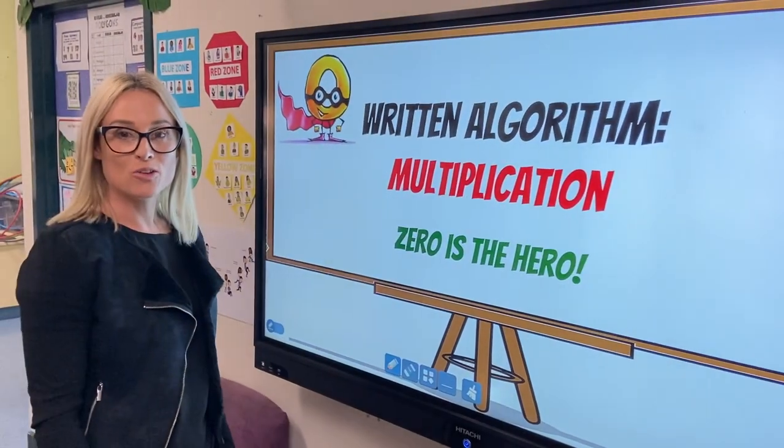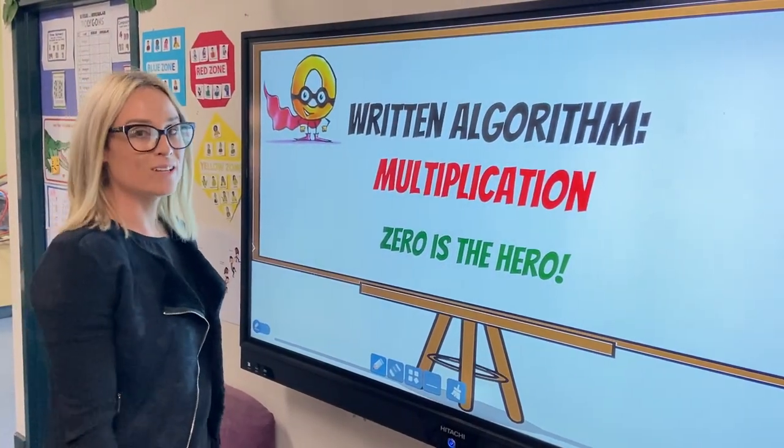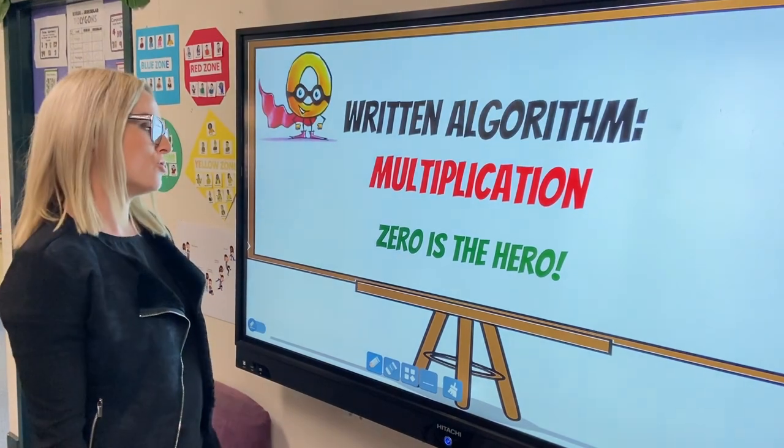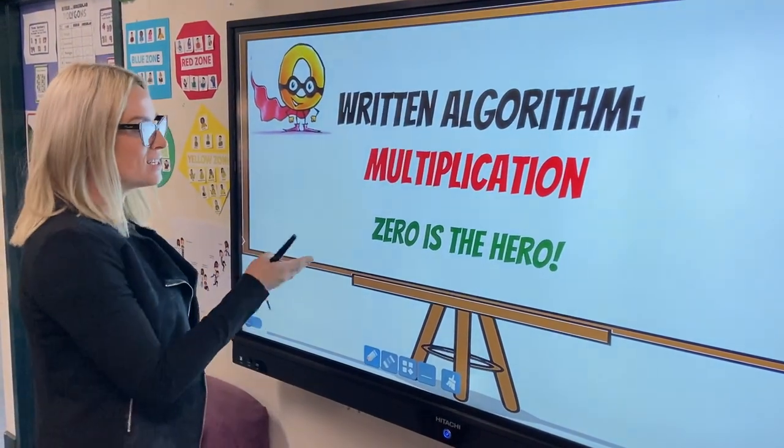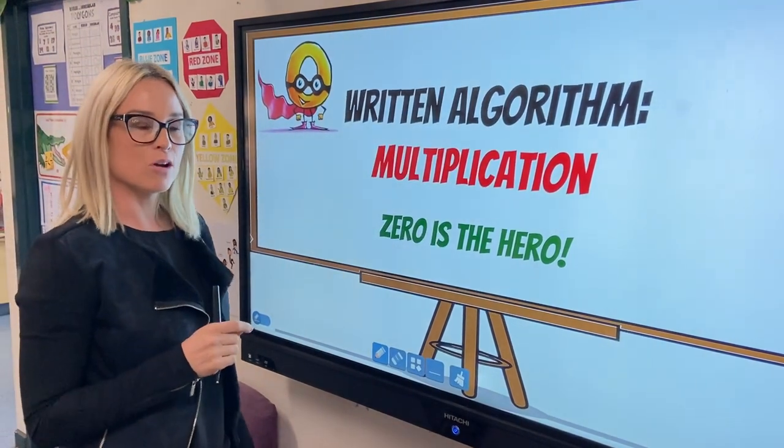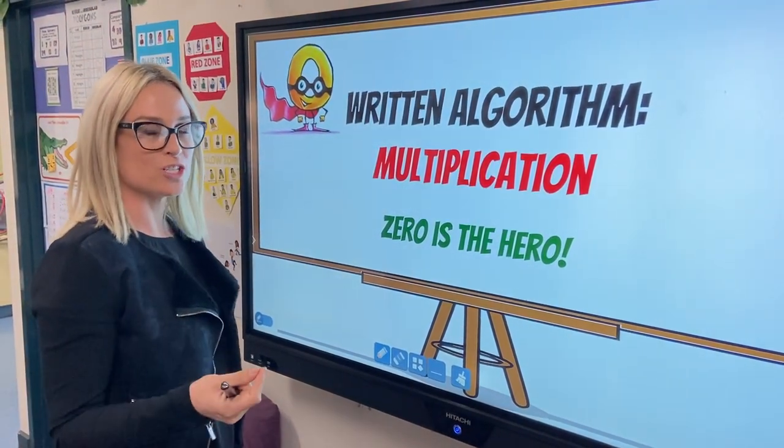Okay, so today we're going to look at multiplication and we're going to use the written algorithm in order for us to do so. So one of the biggest rules and tips and tricks that we use is that zero is actually the hero when we're multiplying with a two-digit number.